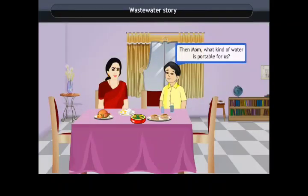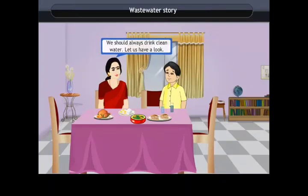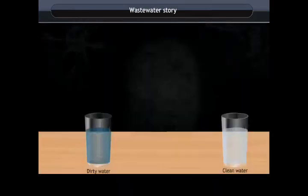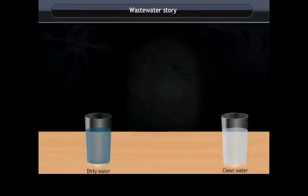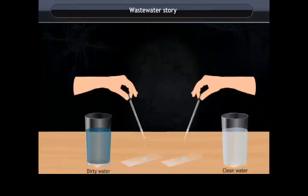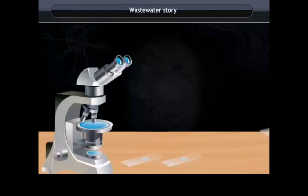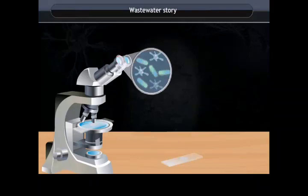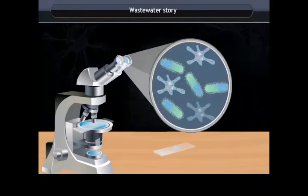The child asks, 'Mom, what kind of water is portable for us?' The mother replies, 'We should always drink clean water. Let us have a look. See this dirty water? It is dark in color and has lots of impurities in it. Also, it smells bad. Now, let's take a sample of clean water and dirty water and examine these samples with the help of a microscope. Observe carefully — the water which is dirty contains many small germs, while clean water does not.'